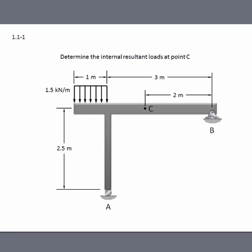This is example problem 1.1-1. The problem asks us to determine the internal resultant loads at point C. Here's our structure, showing point C on the horizontal member and a vertical member.